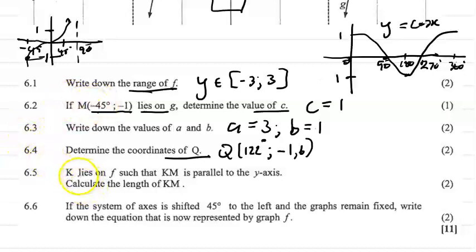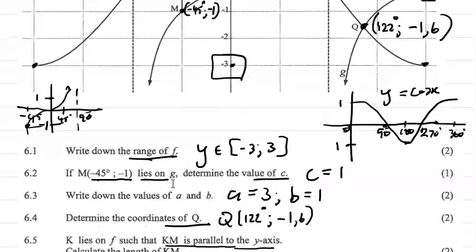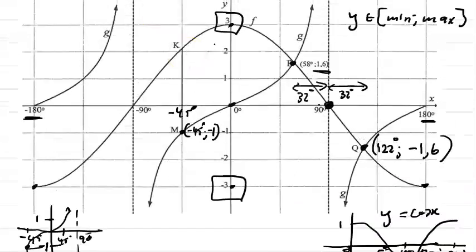Question 6.5: k lies on f such that km is parallel to the y-axis. Calculate the length of km. km is the vertical distance shown on the graph. Since it is parallel to the y-axis, the x-values of k and m are the same.